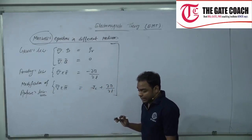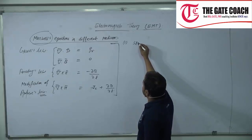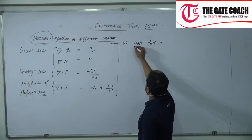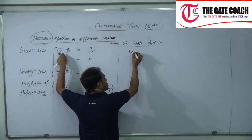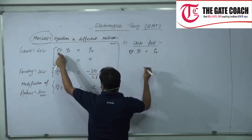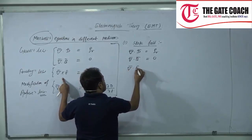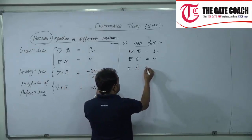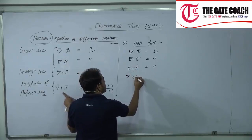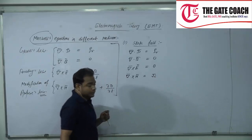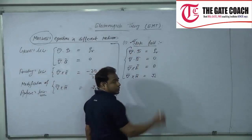We have three different types of medium. The very first one is the medium having a static field. In a static field, the first two equations remain unchanged. The third equation — del cross E — becomes 0, since differentiation of a constant field results in 0. And del cross H is equivalent to J_C. These are the four Maxwell equations written for static field medium.